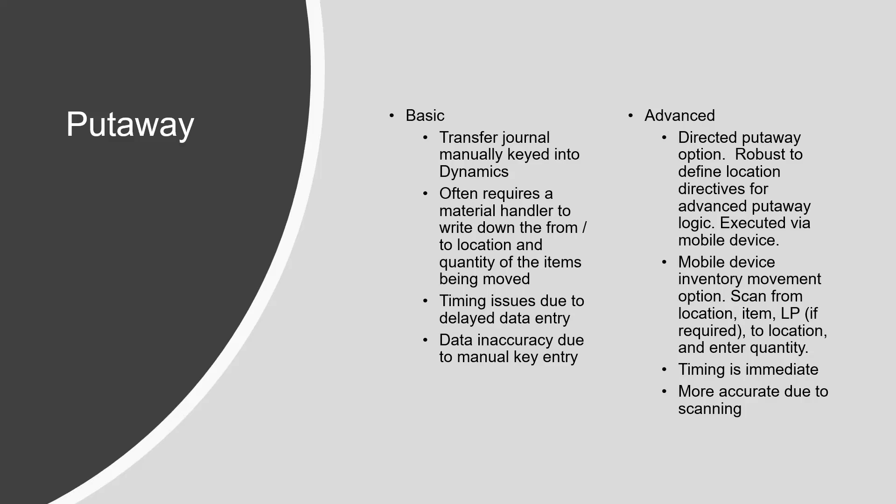These two can coexist for certain tasks and functions. You do not have to be full-blown advanced barcoding and advanced warehousing, and you also don't have to be completely limited to the standard inventory control module. The primary difference between basic and advanced is mobile devices — whether they're iPads, handheld scanners, label printers — barcoding, which is part of the advanced, and data accuracy.